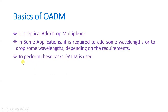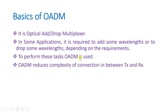We perform the task of adding and dropping wavelengths by using OADM. By using OADM we reduce the complexity of connections between transmitter and receiver. When you establish a connection between transmitter and receiver there are routing algorithms, and if you don't have OADM in the network, the complexity of those routing algorithms will be very high. So to reduce complexity of connection establishment we use OADM.